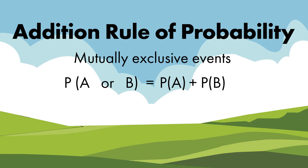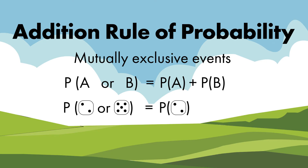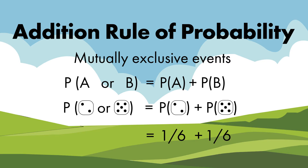This is why it's called the addition rule of probability. For rolling a two or a five, we calculate the probability of rolling a two — one out of six — and the probability of rolling a five — one out of six — and add them together: two out of six.